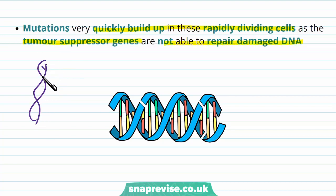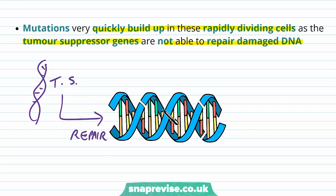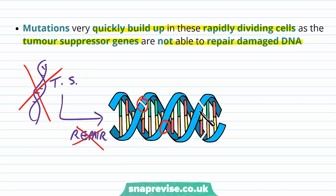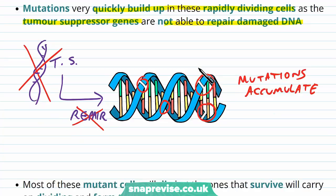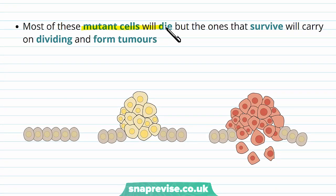These tumour suppressor genes code for particular products which help repair DNA. DNA can accumulate many mutations during replication as mistakes, and if we have mutations to the tumour suppressor genes, we can't repair the DNA, so these mutations keep building up over time. It's almost like we've lost the repair mechanism. Most of these mutant cells will die, but the ones that survive with the correct mutations will carry on dividing and form cancerous tumours.